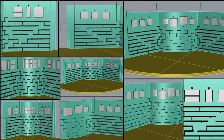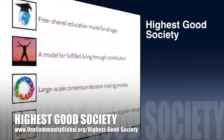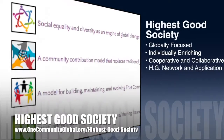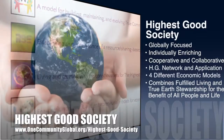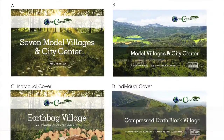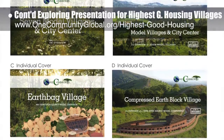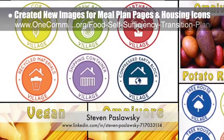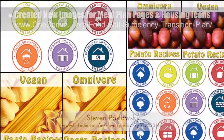One Community's approach to highest good society is globally focused, individually enriching, cooperative and collaborative. It includes a highest good network and application, four different economic models, and combines fulfilled living with true earth stewardship for the benefit of all people and all life on this planet. This last week the core team continued exploring how to create an open source and standardized presentation for highest good housing villages. Steven Poslowski, graphic designer, created new images for the food self-sufficiency plan omnivore and vegan meal plan pages, and several sets of icon ideas for the different highest good housing pages.